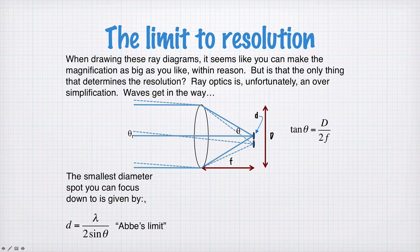So the smallest diameter spot you can focus down to is given by this equation here. It's called Abbe's limit. It's the wavelength of the light divided by two sine theta.